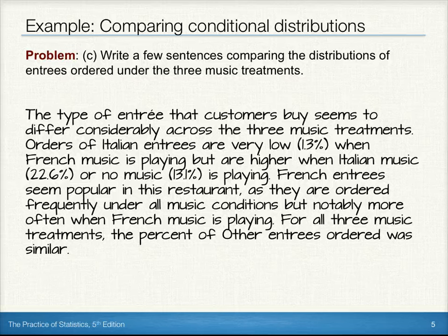To write a few sentences comparing the distributions of entrees ordered under the three music treatments, we want to make sure we talk about how the proportions compare to each other. The type of entree that customers buy seems to differ considerably across the three music treatments. Orders of Italian entrees are very low — only 1.3% when French music is playing — but higher when Italian music is playing at 22.6%, or when no music is playing at 13.1%. French entrees seem popular in this restaurant, ordered frequently under all music conditions, but notably more often when French music is playing. For all three music treatments, the percent of other entrees ordered was pretty similar.